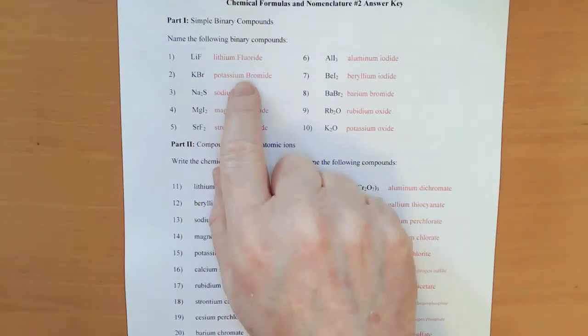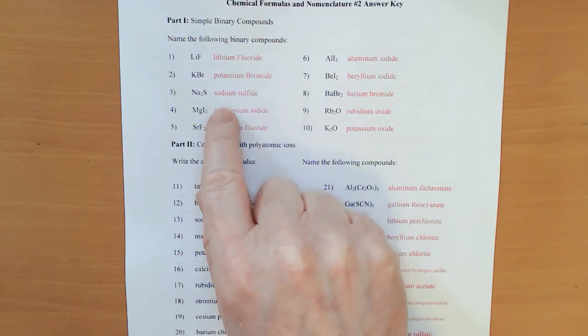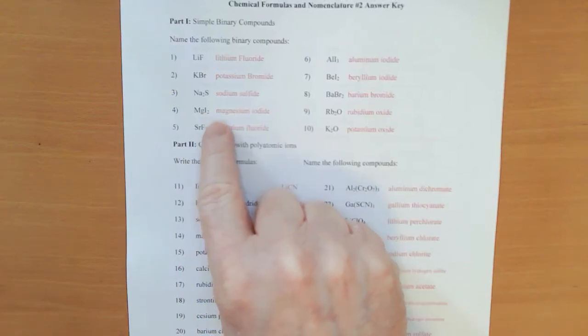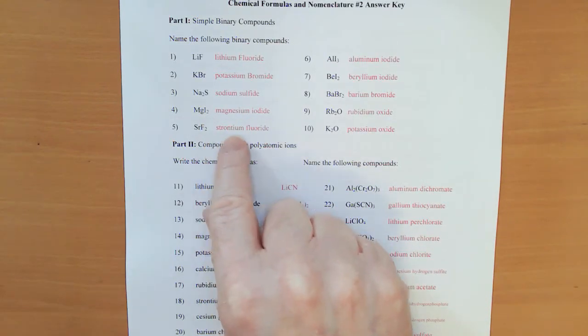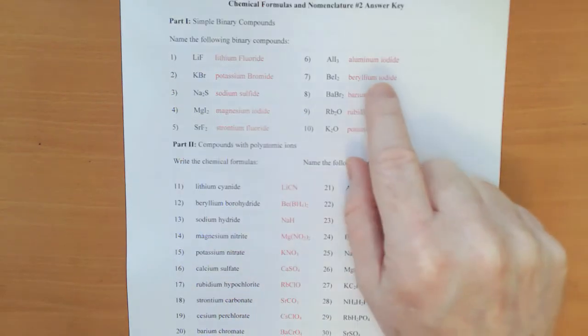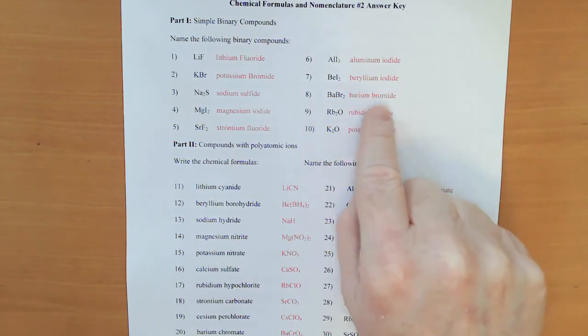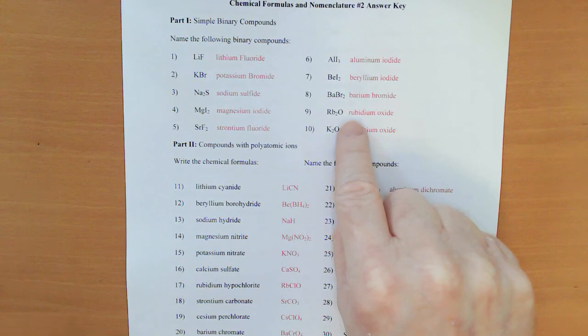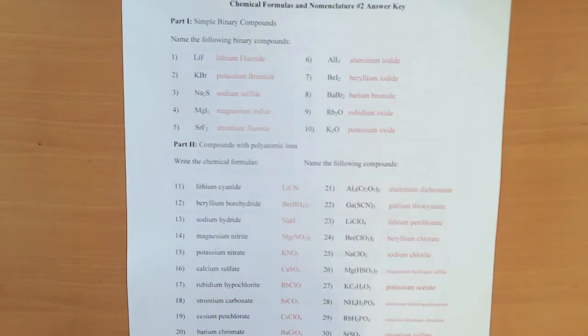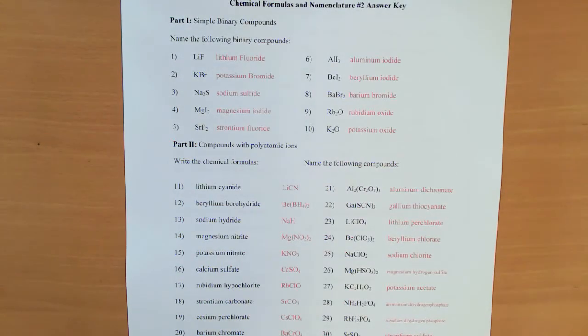We have lithium fluoride, potassium bromide, sodium sulfide, magnesium iodide, strontium fluoride, aluminum iodide, beryllium iodide, barium bromide, rubidium oxide, potassium oxide.